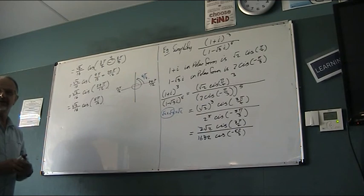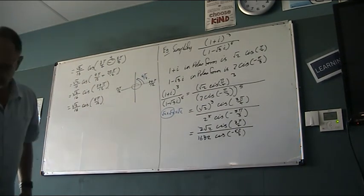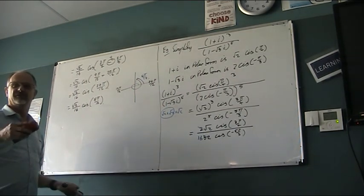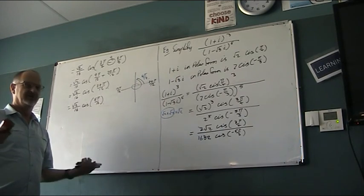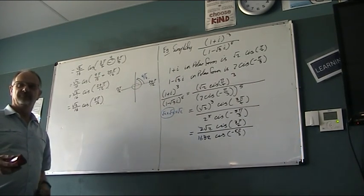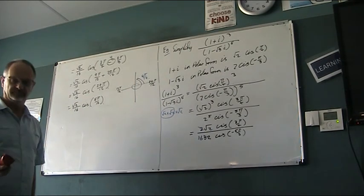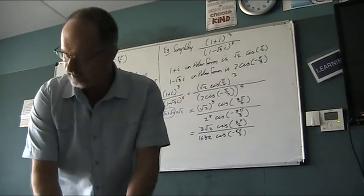Alright, anything about any of that? So really the upshot is that if you've got addition or subtraction, the Cartesian form is the easiest one to do. If you've got multiplication or division or powers, then the polar is the easiest.